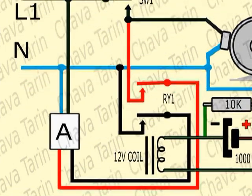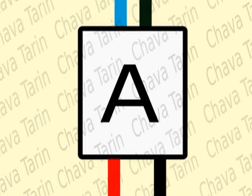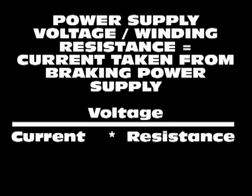Another important factor is the voltage and current capacity of the braking power supply labeled A. You want to measure the motor winding resistance by using an ohmmeter while the motor is disconnected from the power line.